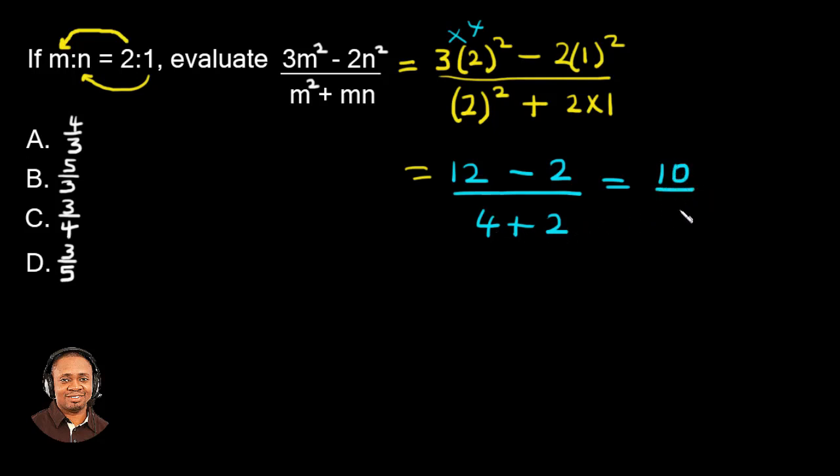To be divided by 4 plus 2, which gives us 6 at the denominator. So we can simplify further. If you notice, 2 in 6 is 3, 2 in 10 is 5. So our final answer is 5 over 3.